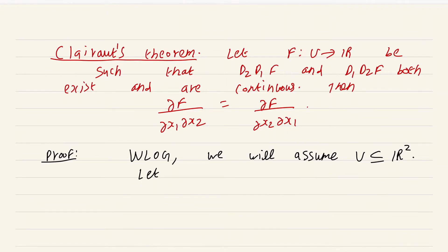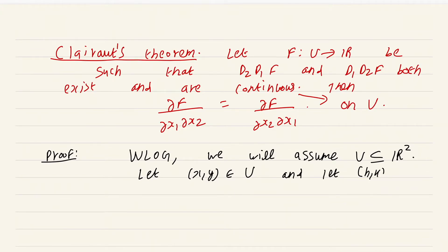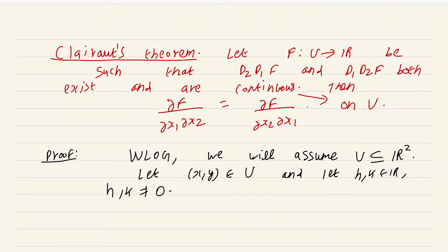We will assume U is a subset of R^2 — so we are only going to consider the two-variable case. The general n-variable case can be easily reduced to this situation, which I am going to leave to you. Let the point (x, y) be in U. Both partial derivatives should be continuous on the whole of U.